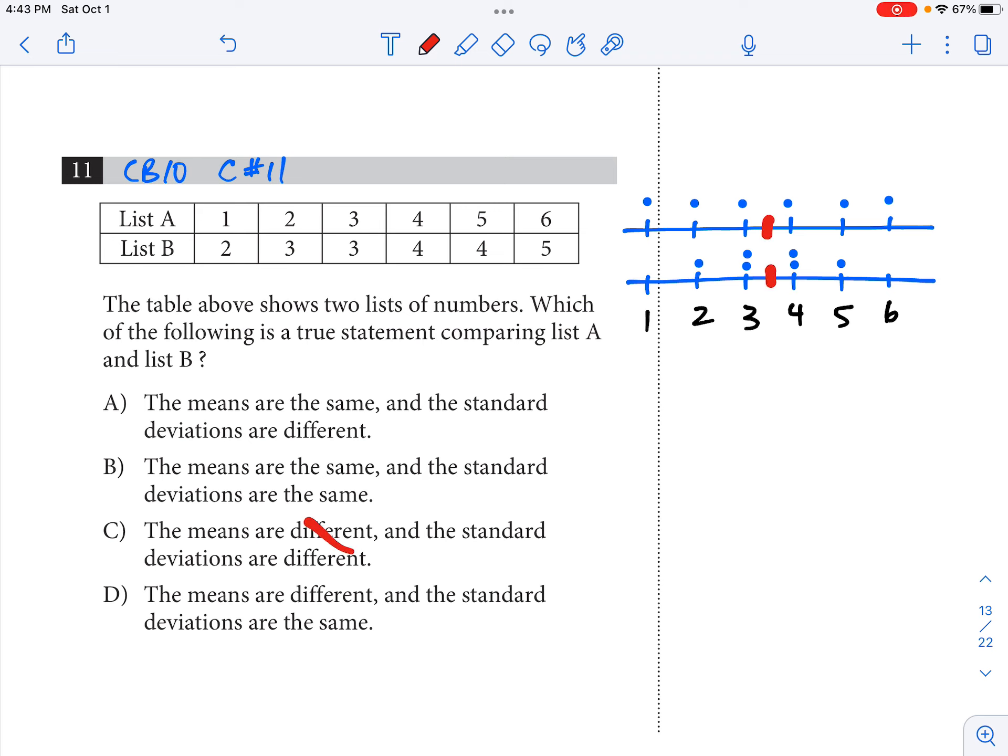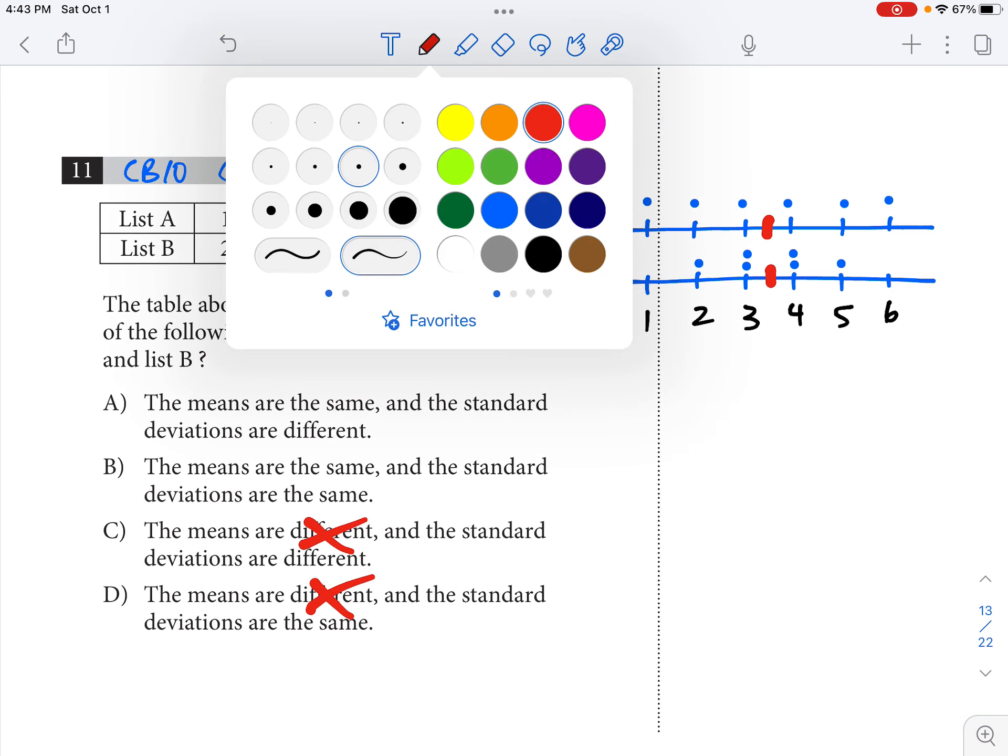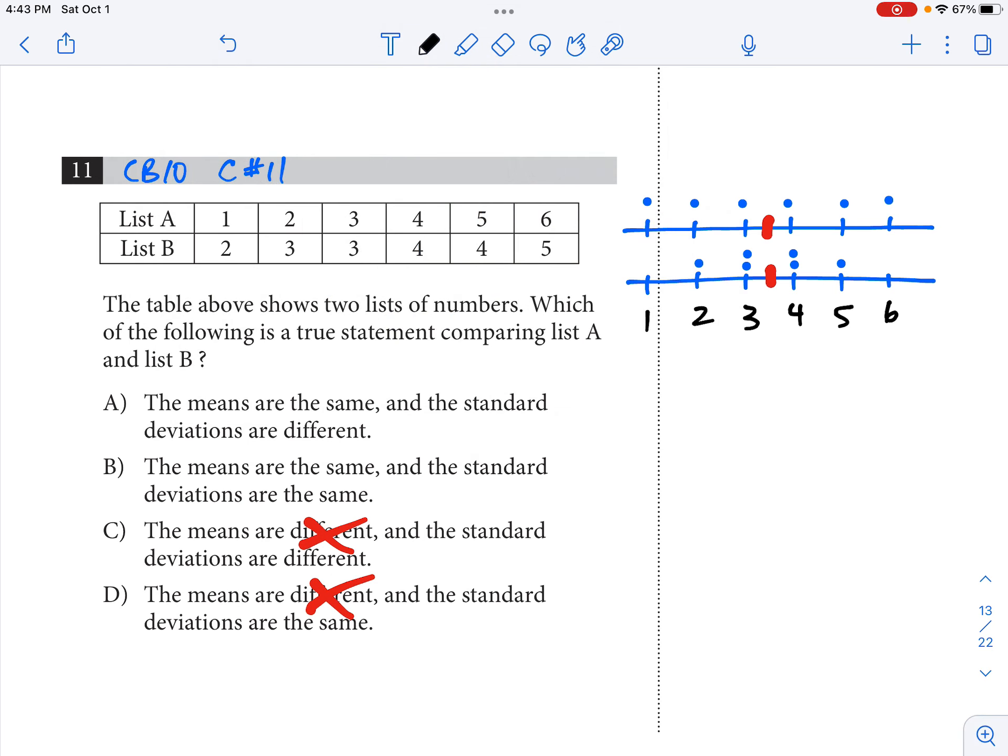That eliminates this answer choice and this answer choice. So now that's what I was talking about. We're down to a 50-50 shot. Let's talk about standard deviation now.